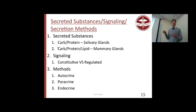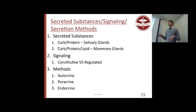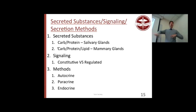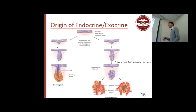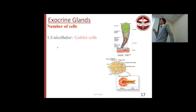Secretive substances: mammary glands have all three types; salivary glands have two. Signaling: constitutive versus regulated — constitutive is always on, regulated means it may be on or off depending on stimulus. Autocrine — signals to itself. Paracrine — signals to neighboring cells. Endocrine — signals through blood and lymph. Exocrine glands have ducts; endocrine glands are missing the duct — that's the key point about endocrine.